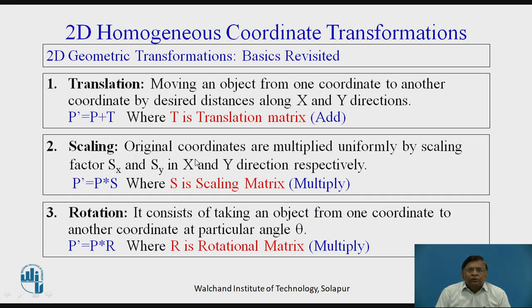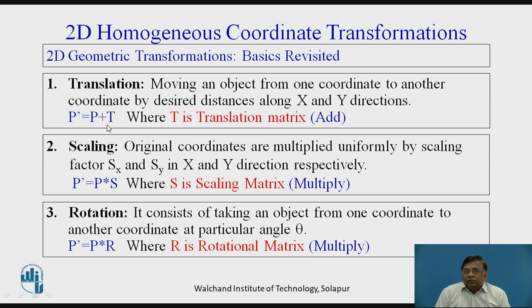This is a revision of the three basic types of geometric transformations. Very briefly, in translation, the new point P-dash is equal to its original point plus the translation matrix. The point to note is we are adding two matrices in the translation operation. In scaling, we multiply the given point position P by its scaling matrix and we get the new scaled position of the point — so in scaling we multiply.